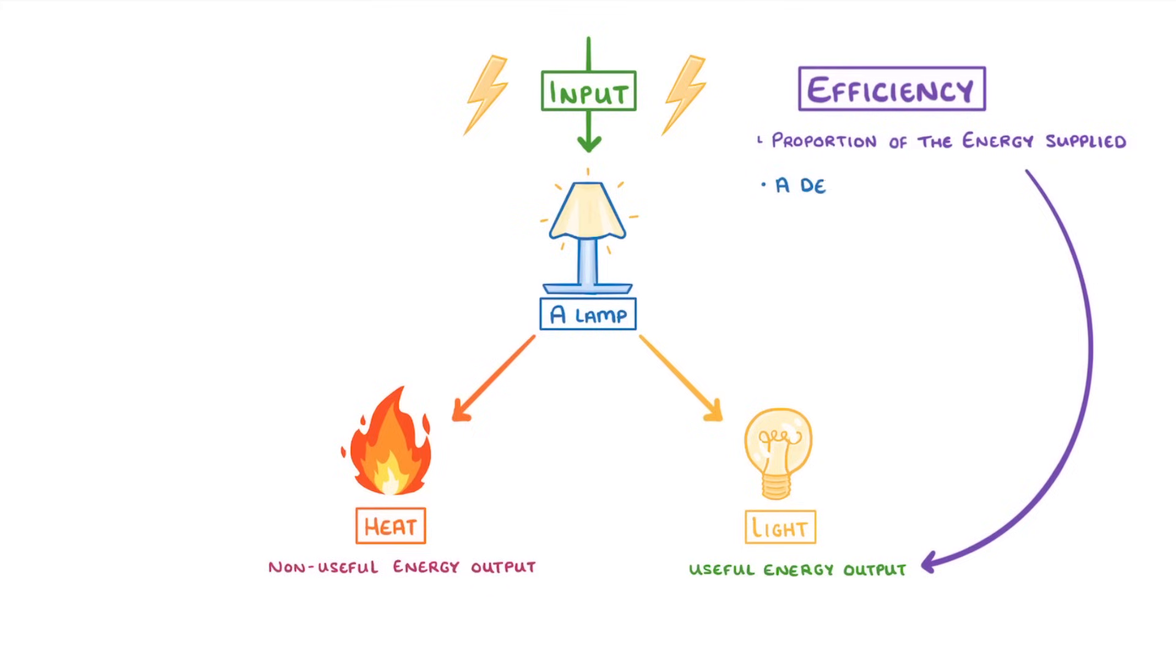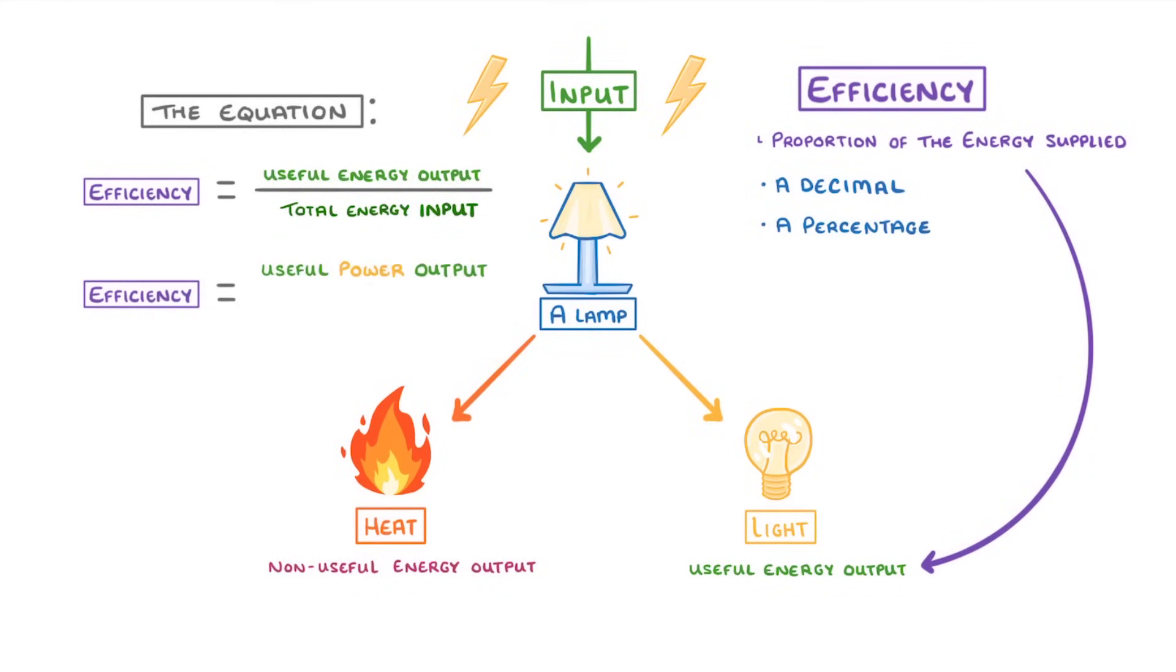You calculate efficiency as a decimal or percentage using the equation: efficiency equals useful energy output divided by total energy input. Or if you're using power, efficiency equals useful power output divided by total power input.